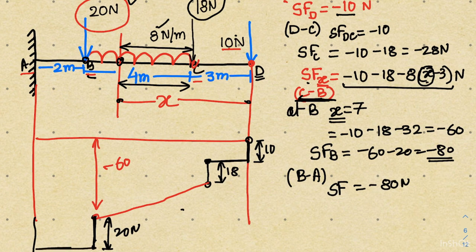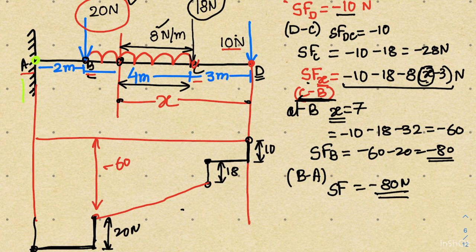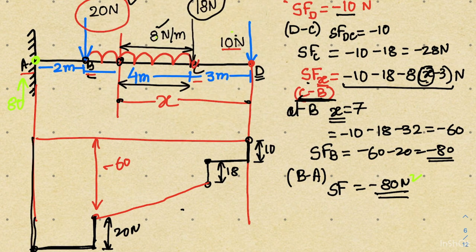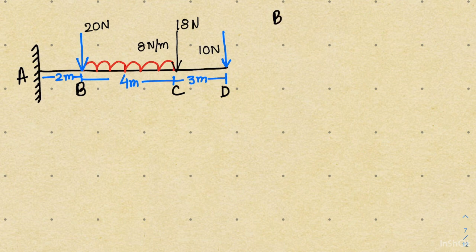At point A the magnitude is minus 80. If you calculate the reaction at the support, it will be upward and equal to the total load: 10 plus 18 plus 8 times 4 plus 20 equals 80 newton. The reaction of 80 upward balances the shear force, so the shear force diagram closes at A. Even if you don't calculate the reaction, for a cantilever beam you must close the shear force diagram at the fixed end. This completes the entire shear force diagram.